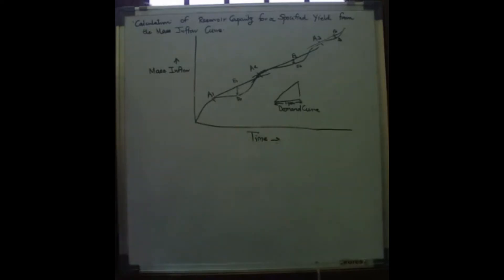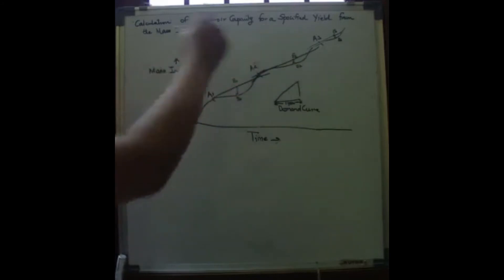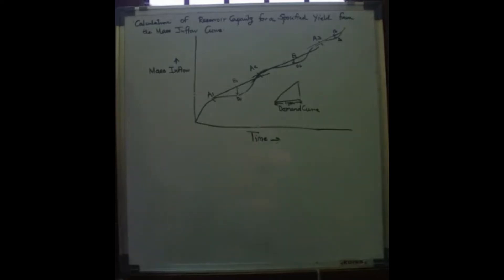The vertical intercepts indicate the volume by which inflow falls short of demand. The biggest of the vertical intercepts represents the required reservoir capacity.